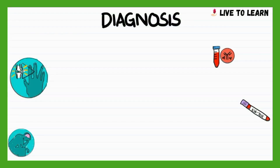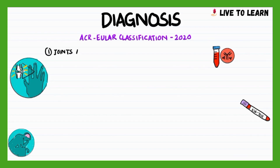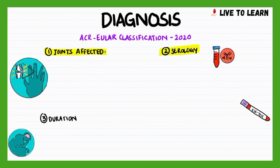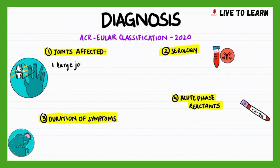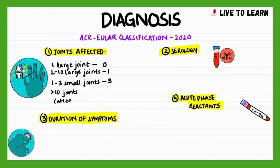For diagnosing rheumatoid arthritis, a scoring system proposed by the American College of Rheumatology and European League Against Rheumatism is used, which gives each patient a score based on four parameters: the number of joints affected, the serology, the duration of symptoms, and acute phase reactants. For one large joint, a score of 0; for 2 to 10 large joints, a score of 1; for 1 to 3 small joints, a score of 3; and for more than 10 joints, a score of 5 is given.